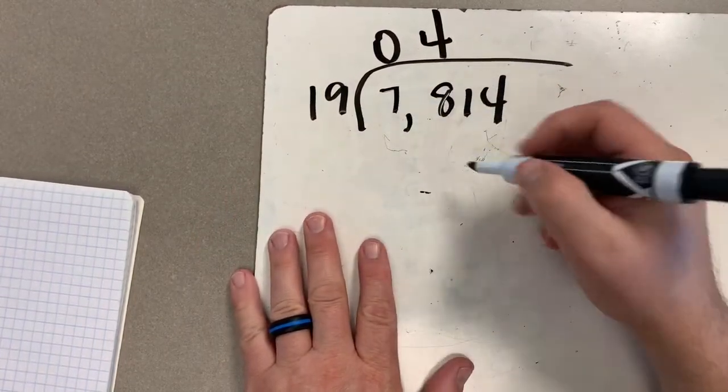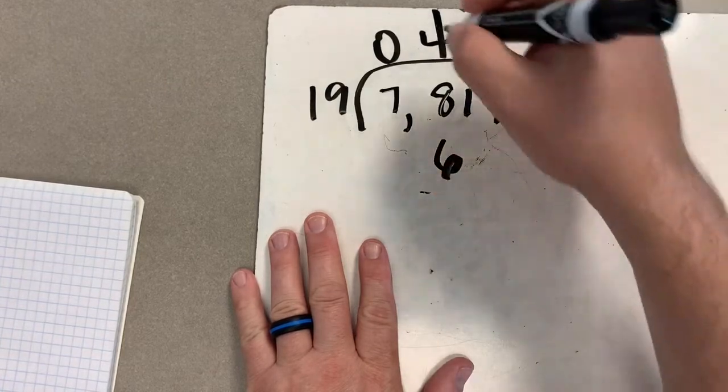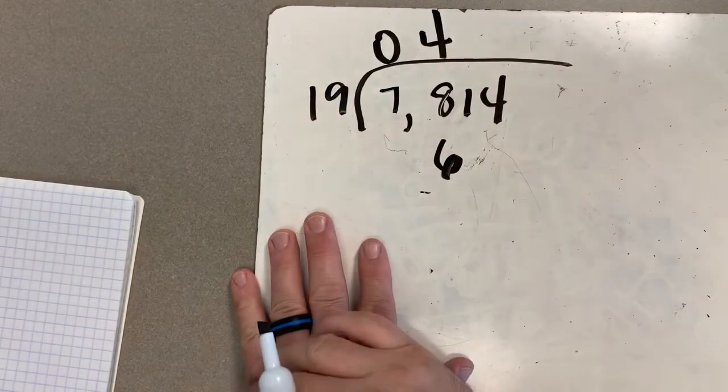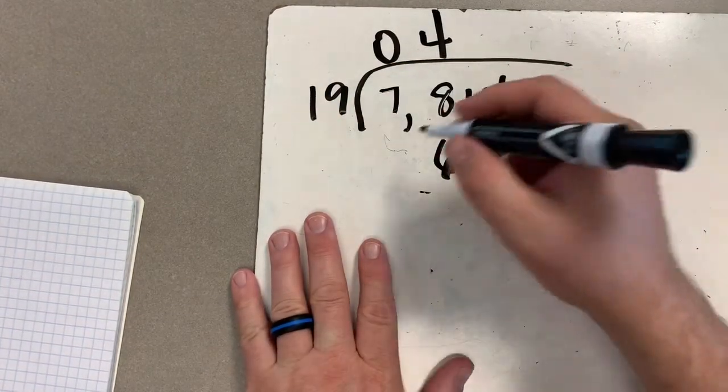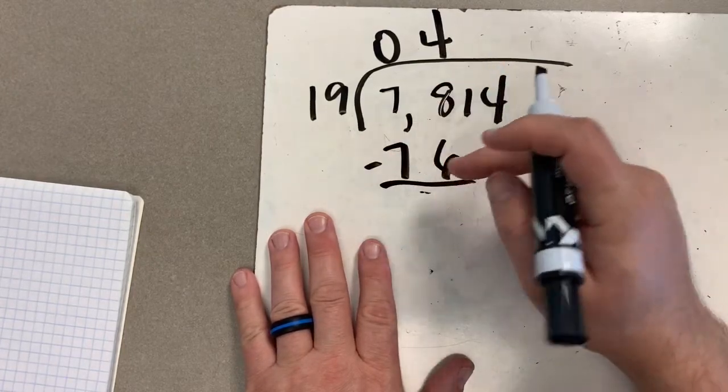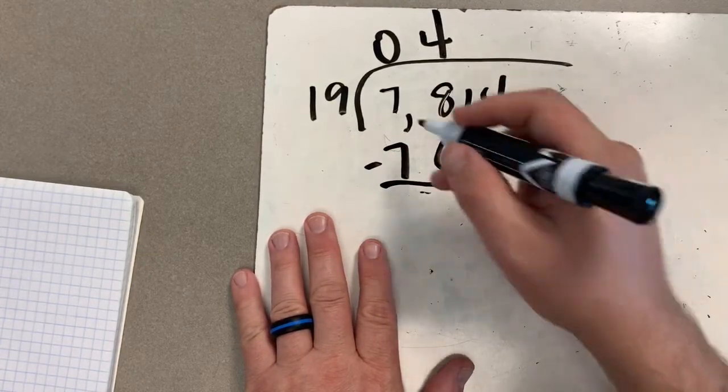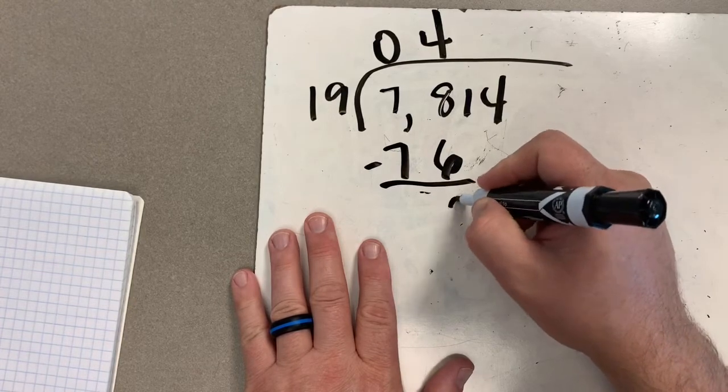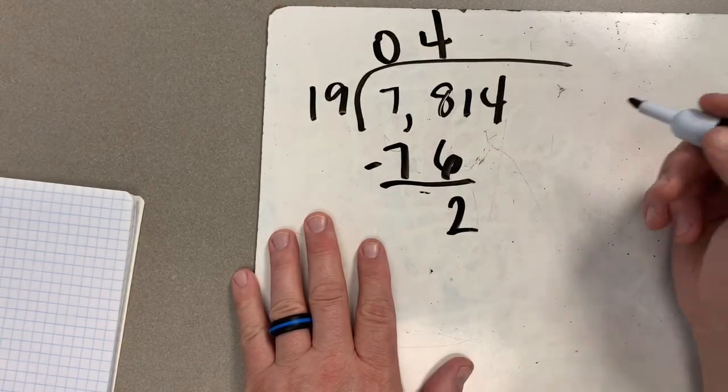So four times nine is 36, six down, carry our three. Four times one is four, plus three more gives me seven. Ladies and gents, I can do this because 76 is less than 78, so I can take some out. I have a two left over.